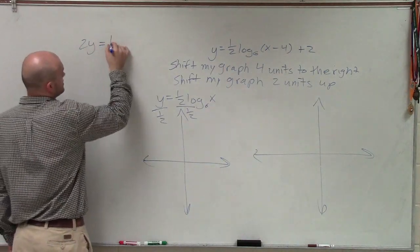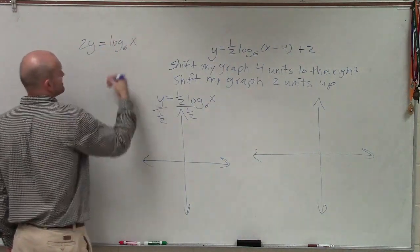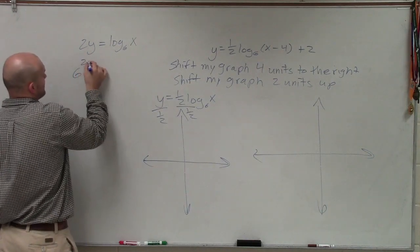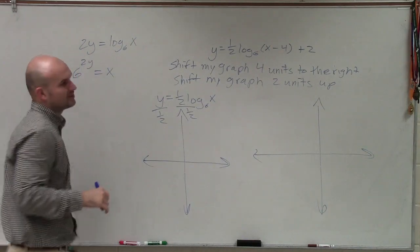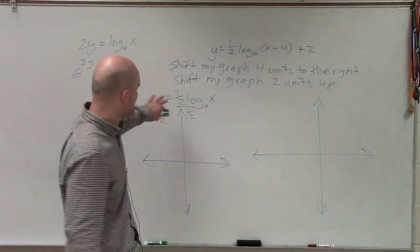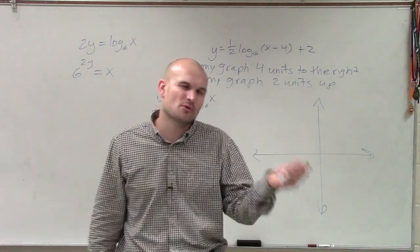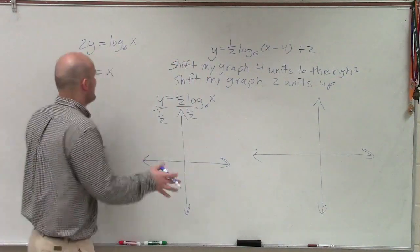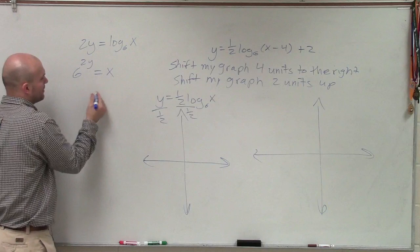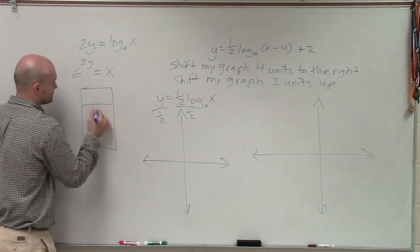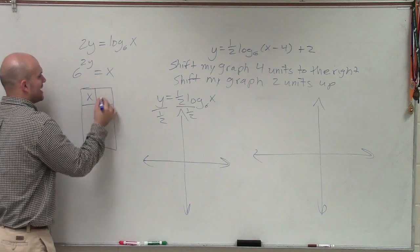So therefore, it's 2y equals log base 6 of x. Then when I rewrite this in exponential form, I have 6 raised to the 2y equals x. And again, you can graph the parent function without the 1½ and then just multiply each of those points. But then again, you're just doing more and more dilations, which I like to kind of get it out of the way. So now, what I want to do is create a table of values for this graph. So I'll have my x and my y's.